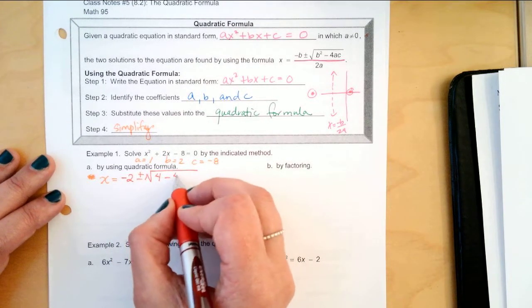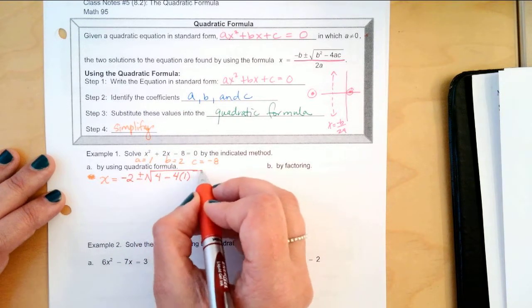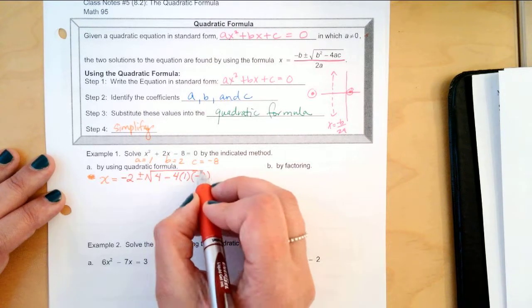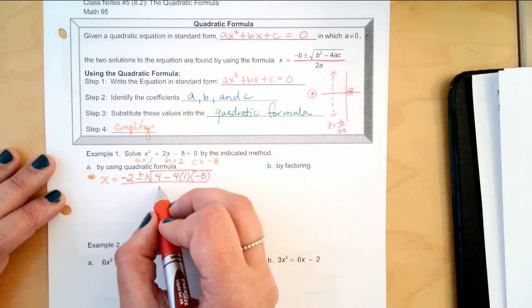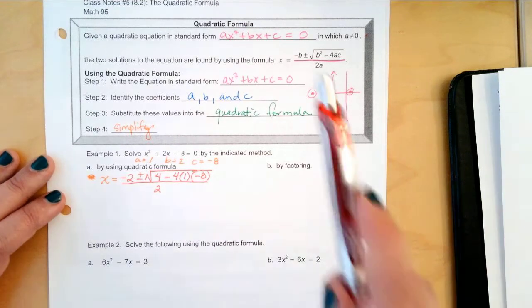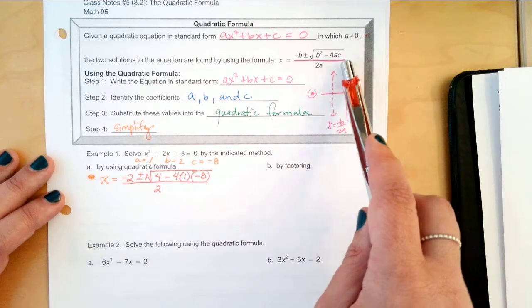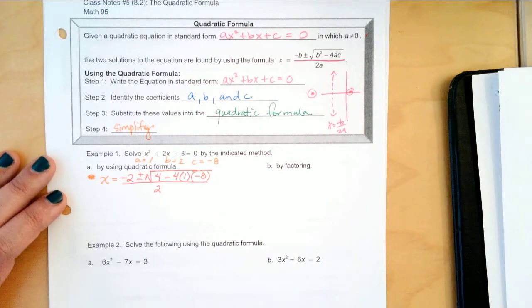minus 4 times a, which is 1, times c, which is negative 8, correct? And then all over 2a. Oh, by the way, you can memorize it using the pop goes the weasel song. It goes x equals negative b plus or minus square root b squared minus 4ac all over 2a. Yeah, Google it. Okay.